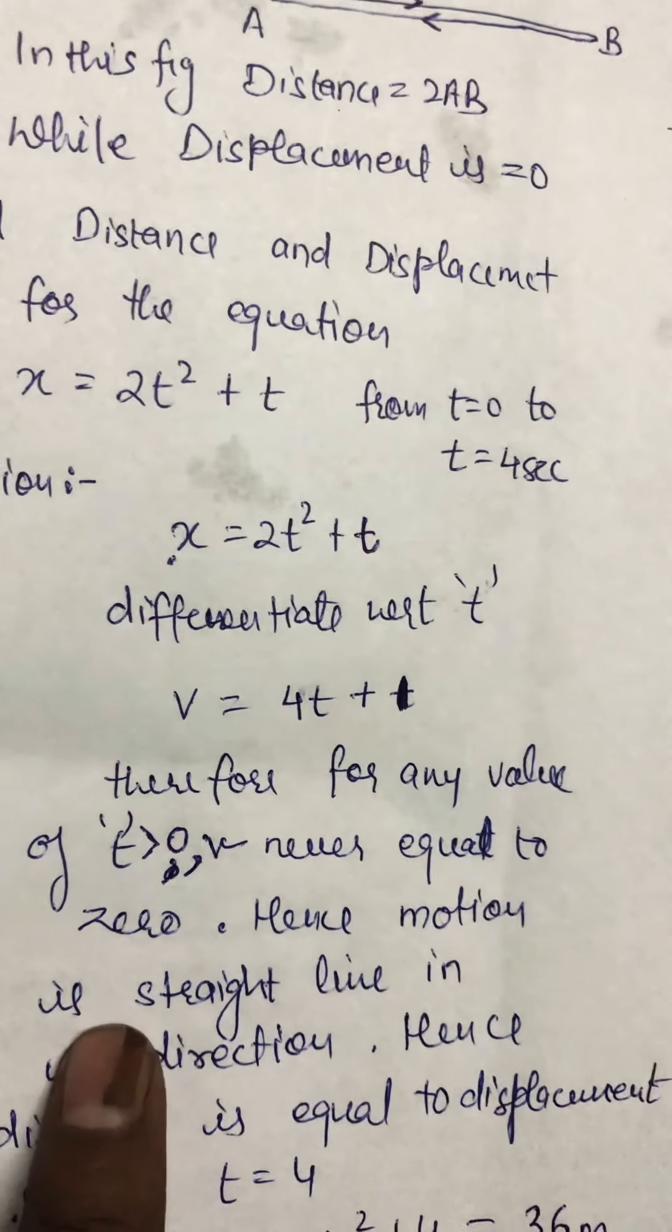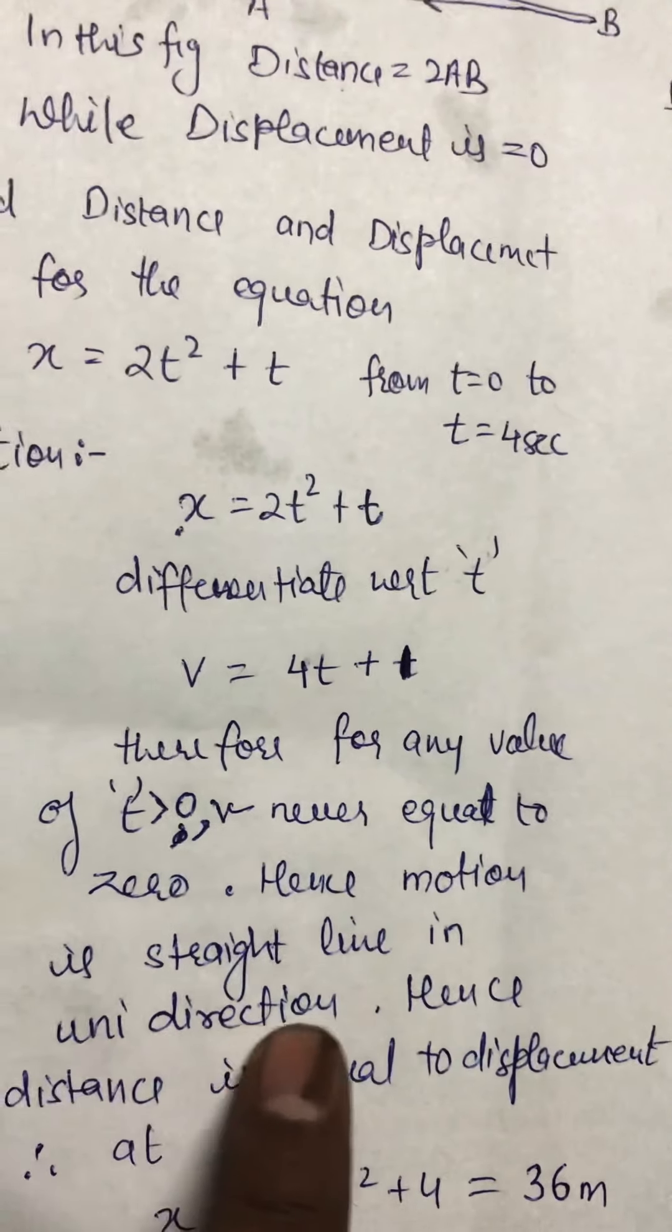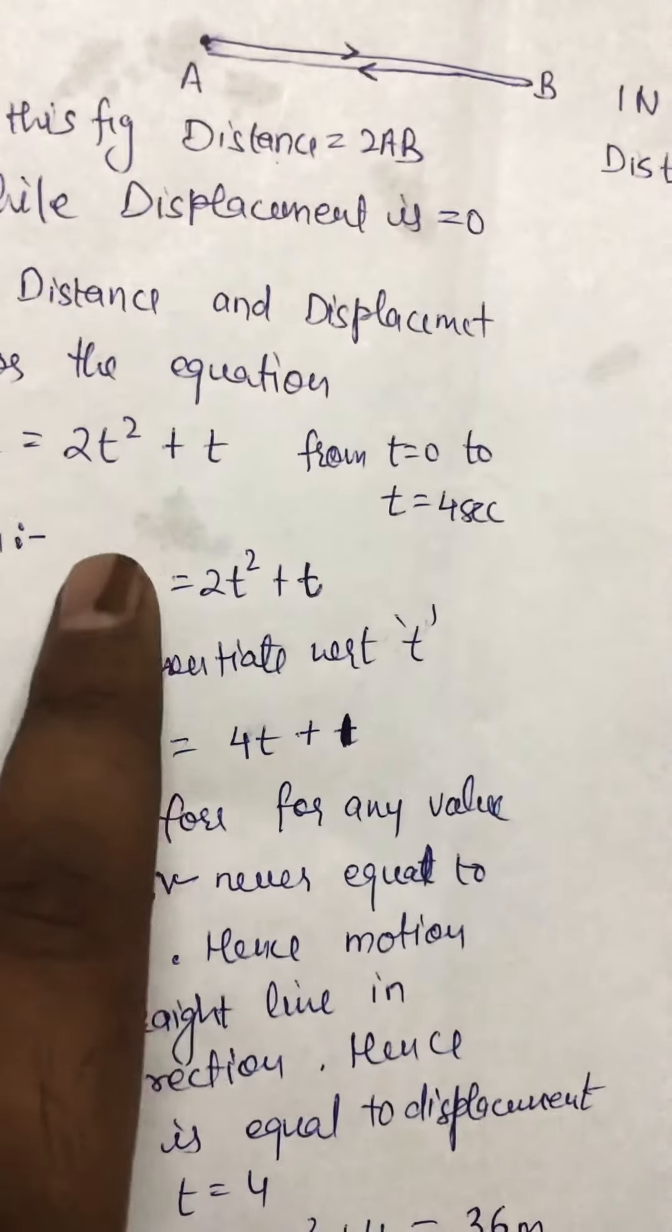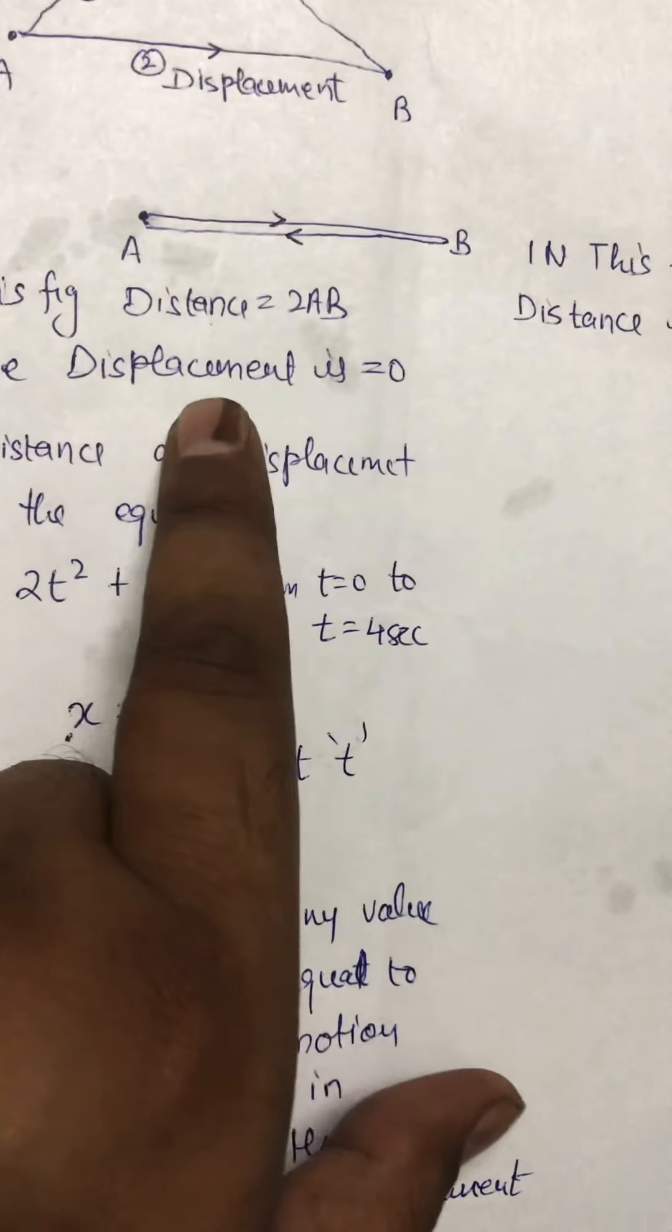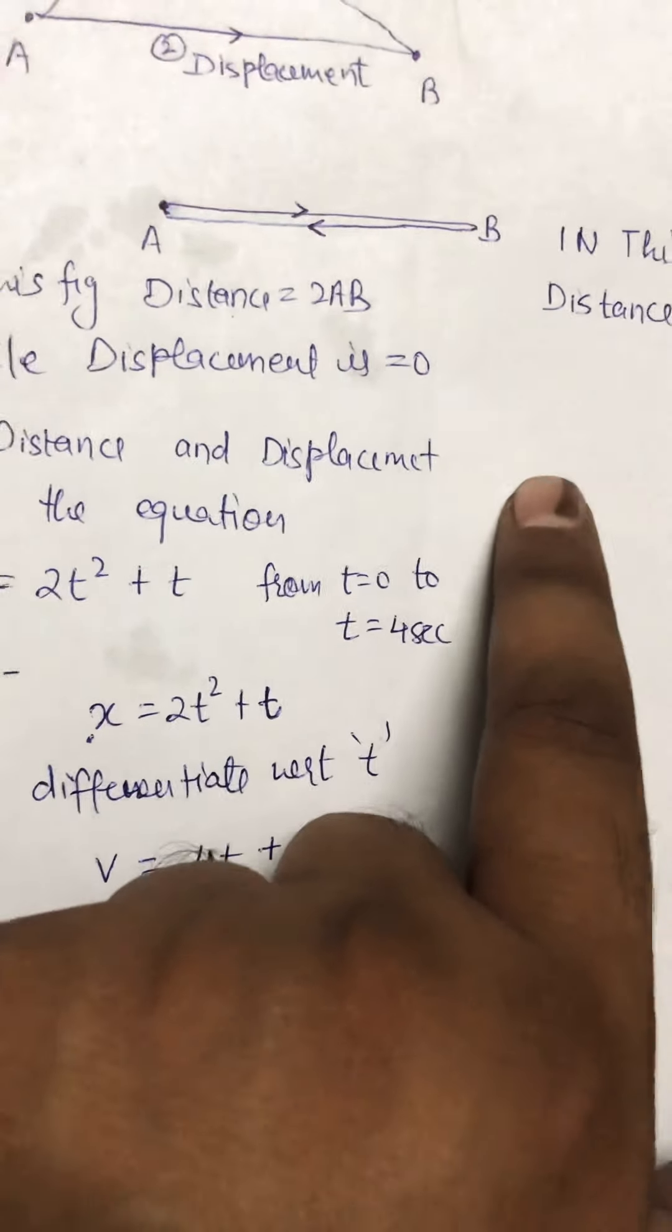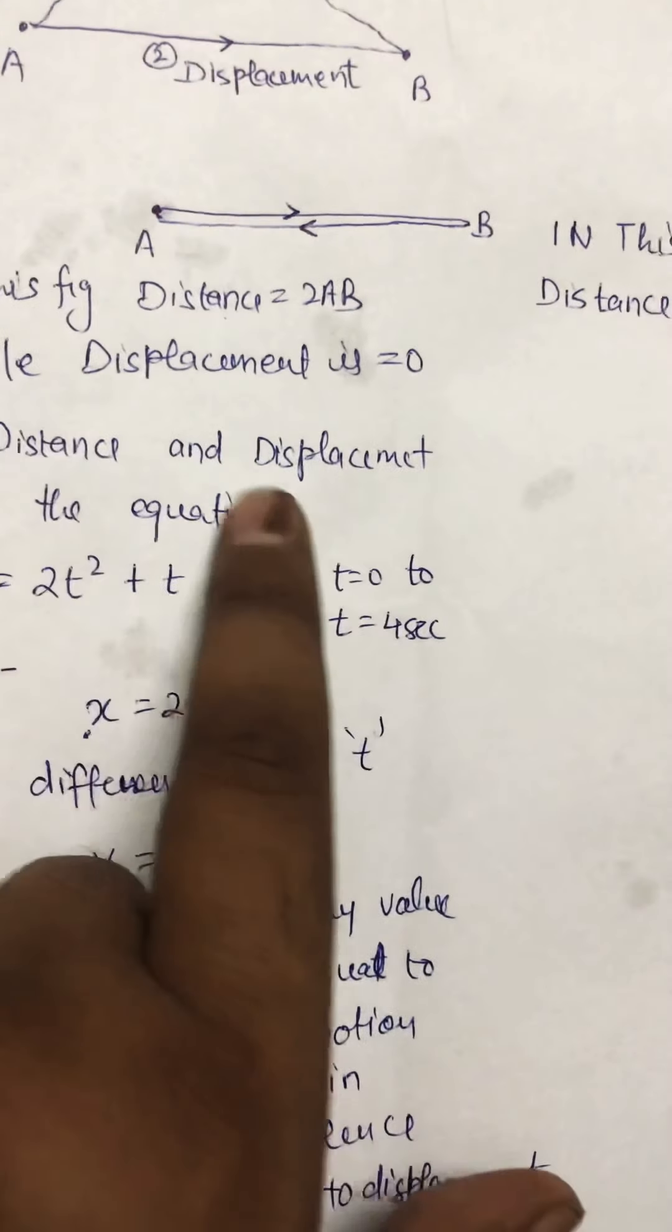This means the motion is in a straight line in one direction. Unidirection means a particle moving only in a single direction like this. The particle moves in this direction, it does not come back.